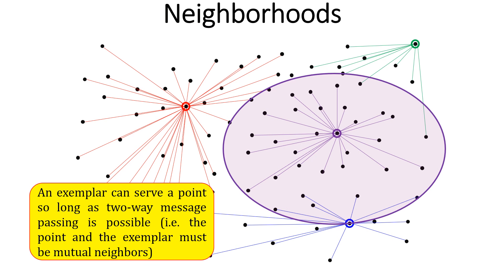An exemplar like this one here can serve any of these points as long as two-way message passing is possible between the points and the exemplar. That is, the point and the exemplar must be mutual neighbors.